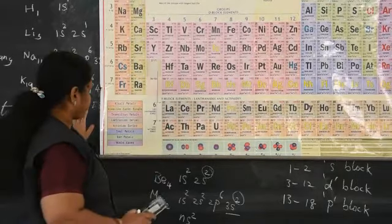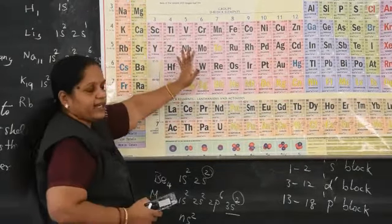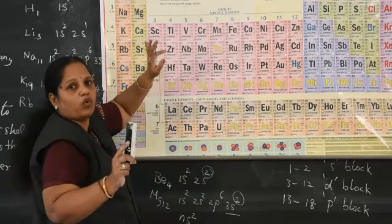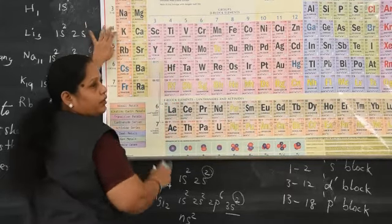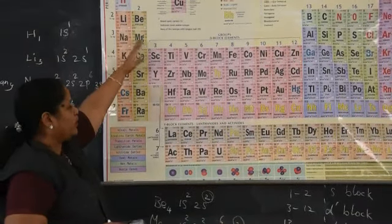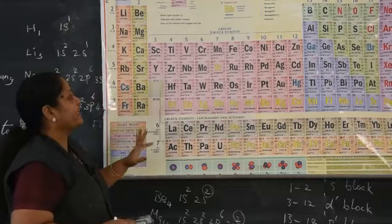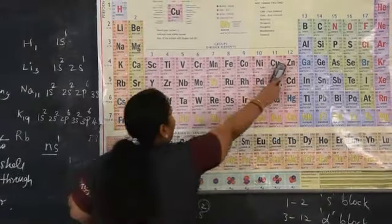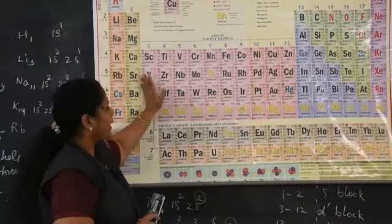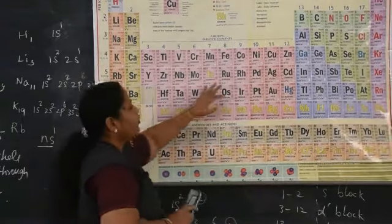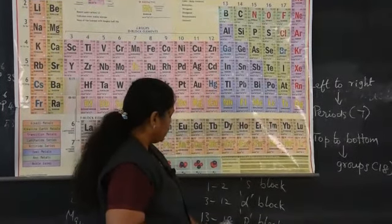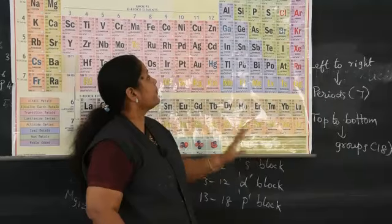Among all the elements, some are metals, some are non-metals, and some are semi-metals. When we move from top to bottom down the group, metallic character increases; at the top, non-metallic character is more. However, all 40 elements in D block are metals only.